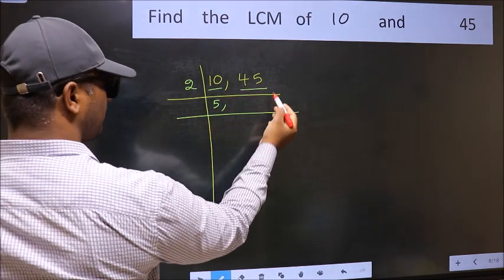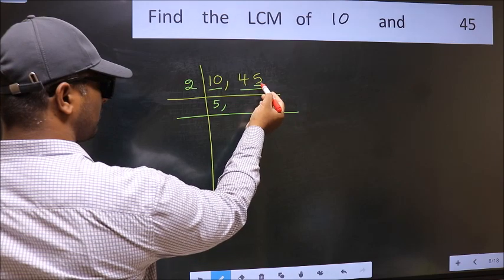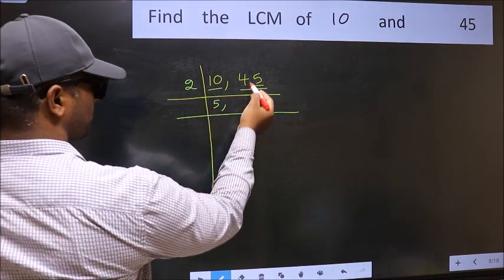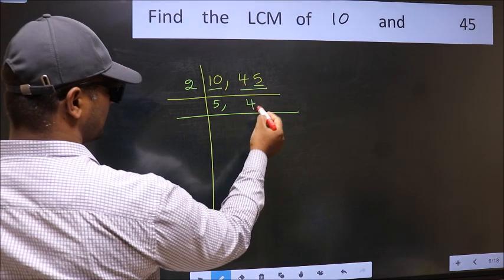The other number, 45. Last digit is 5, not even. So this is not divisible by 2. So you write it down as it is.